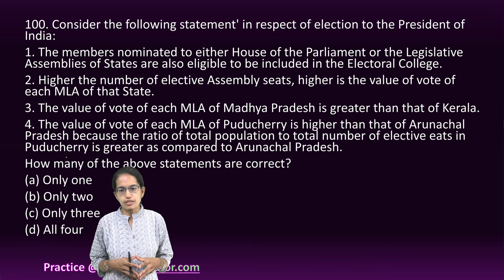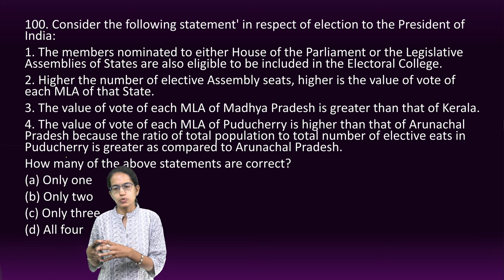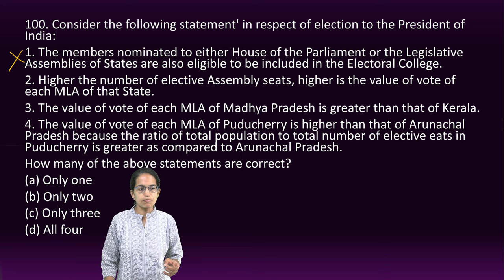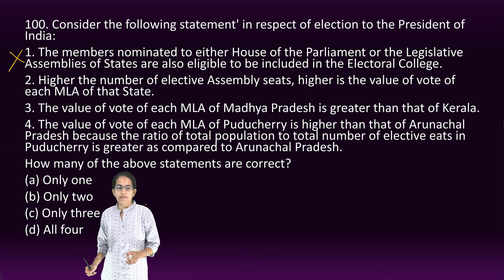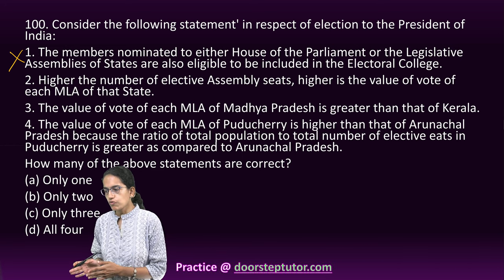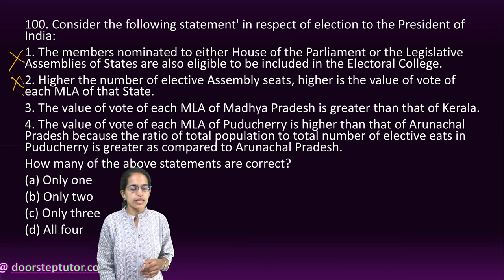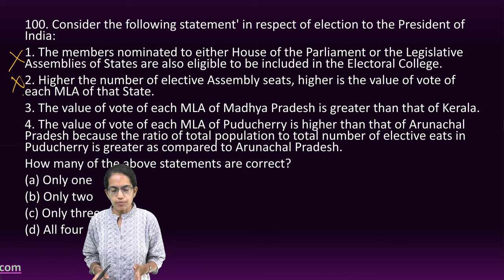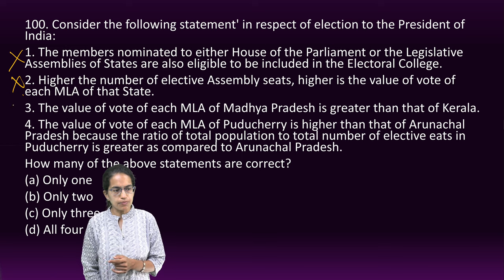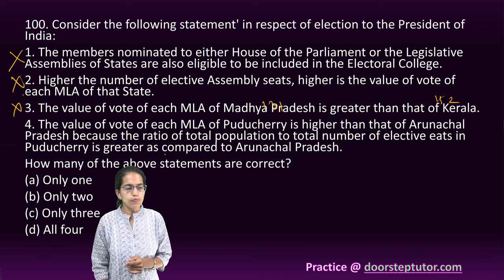The last question covers the electoral college. Members nominated to either house of Parliament or the legislative assembly are not eligible to be included in the electoral college — so statement 1 is incorrect. Statement 2 is also incorrect because a higher number of assembly seats does not indicate a higher value of votes; weightage is based on average constituency size. The value of the vote for an MLA of Madhya Pradesh being greater than Kerala is also incorrect — Madhya Pradesh is 131 and Kerala is 152.